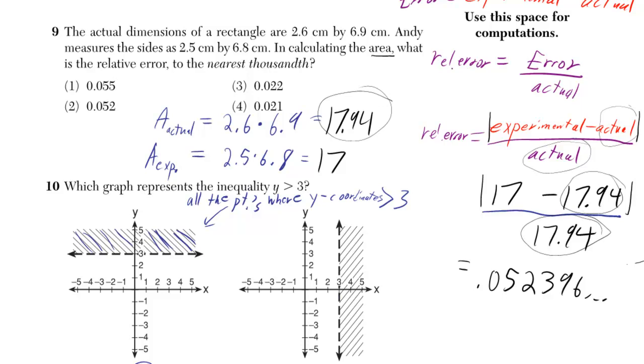So you just plug in, and if you go to a calculator, you'll get 0.052396.